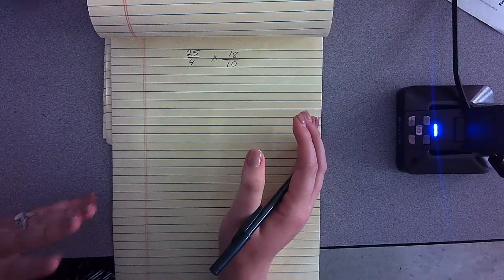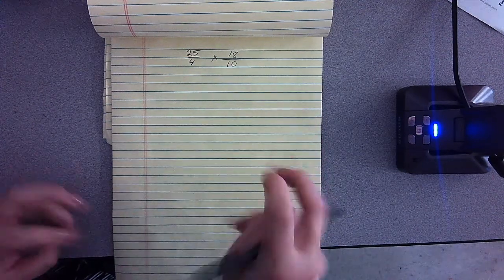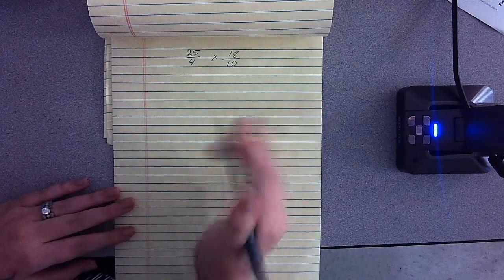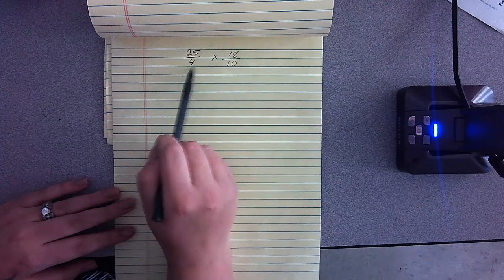However, the way I would really encourage students to do it is method two, as we've been calling it. The first strategy would be for them to just multiply across: 25 times 18, 4 times 10.